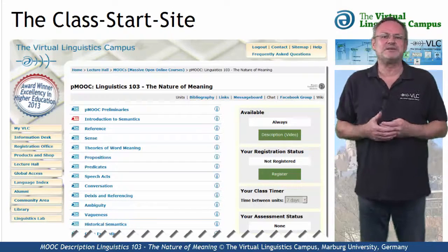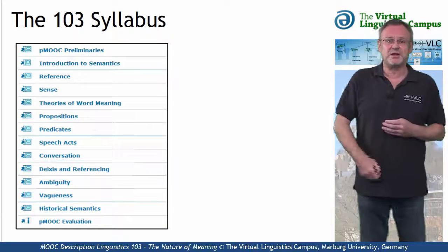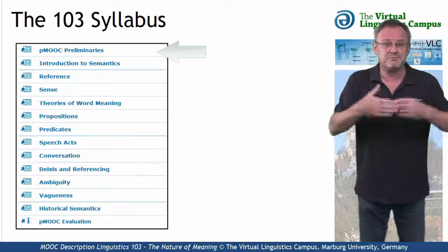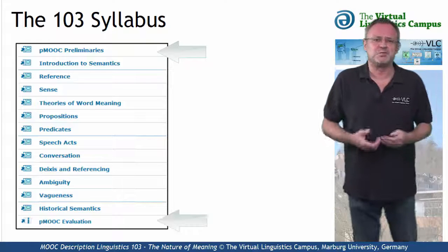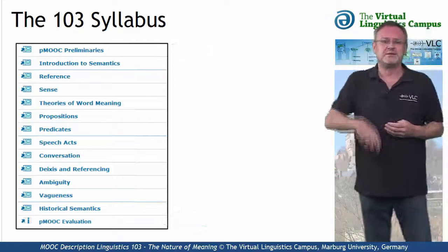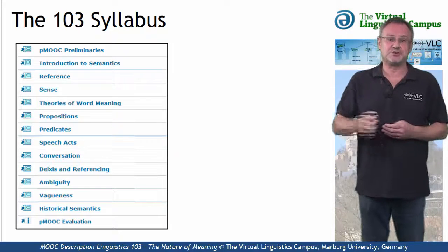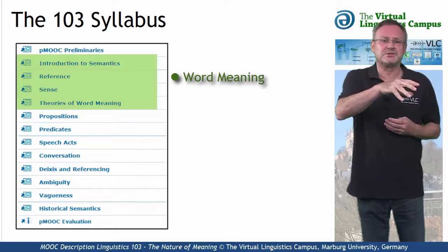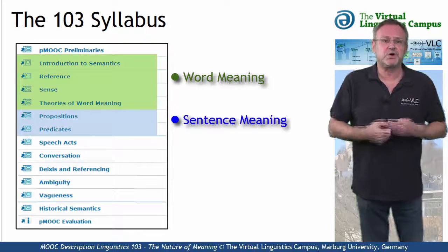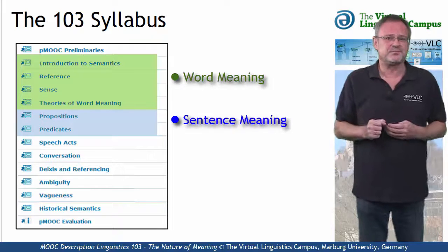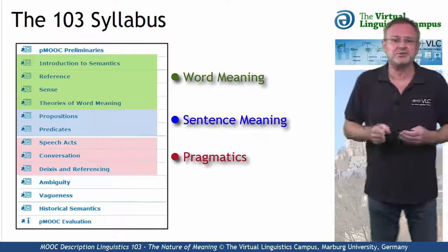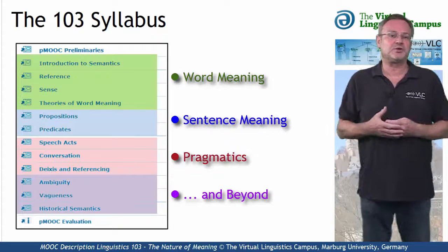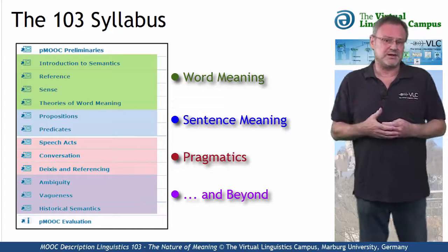Let us now look at the content of Linguistics 103. The class consists of 13 units, where the first one — the class preliminaries — informs you about some general aspects of the class and discusses what it means to study online on the Virtual Linguistics Campus. The last unit is your option to evaluate the class. The remaining units are subdivided into four main parts. The first part looks at word meaning from several angles. In part two, we deal with the meaning of sentences, which involves an excursion into logic. The third part focuses on the meaning of utterances and discusses the principles underlying conversation. Beyond these three central parts, we will look at additional phenomena such as ambiguity and vagueness, or meaning from a historical perspective.